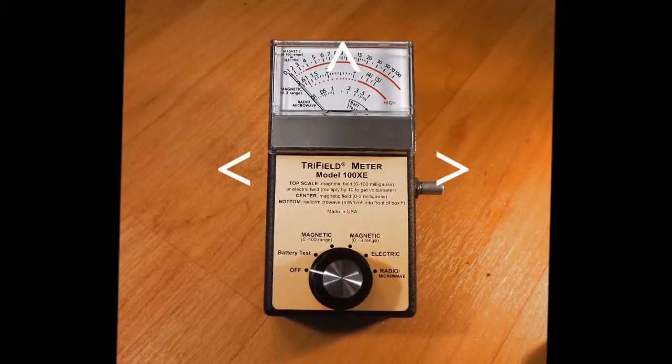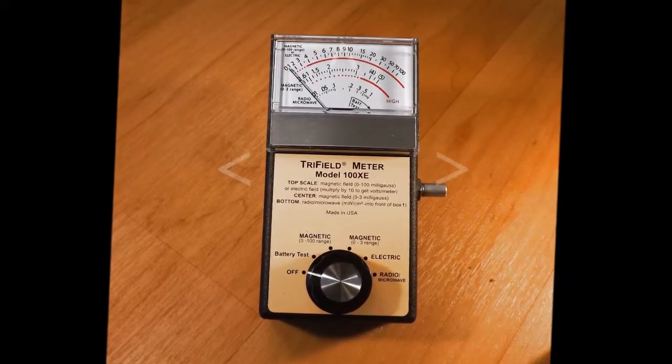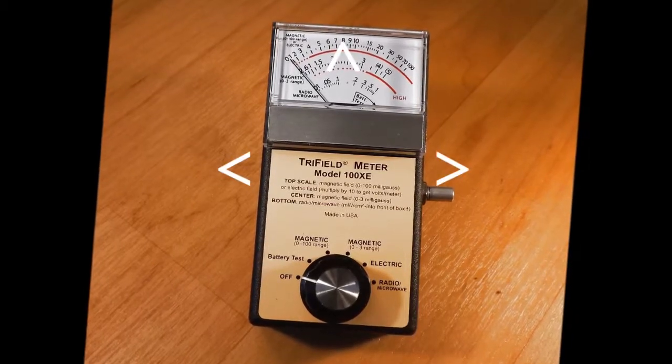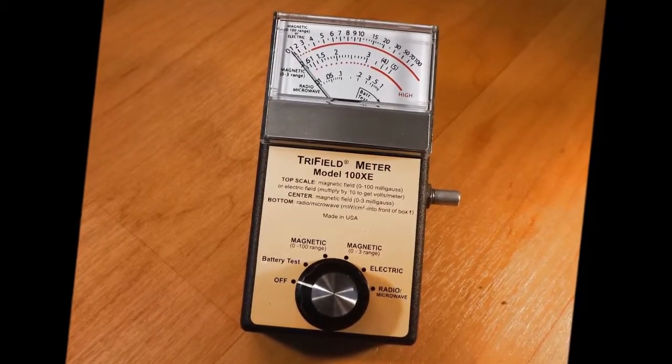This meter is three axis for magnetic field measurements. That means that the meter looks in all directions simultaneously. You do not need to worry about whether the meter is pointed in the right direction.